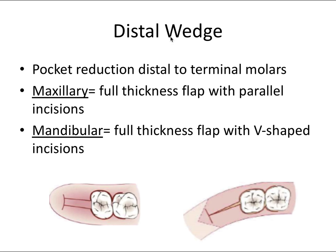A specific type of gingival surgery is distal wedge surgery, for pocket reduction distal to terminal molars. For the maxillary terminal molar, you do a full thickness flap with parallel incisions. For the mandibular terminal molar, again a full thickness flap, but with V-shaped incisions. This is definitely important to know for the board exam.